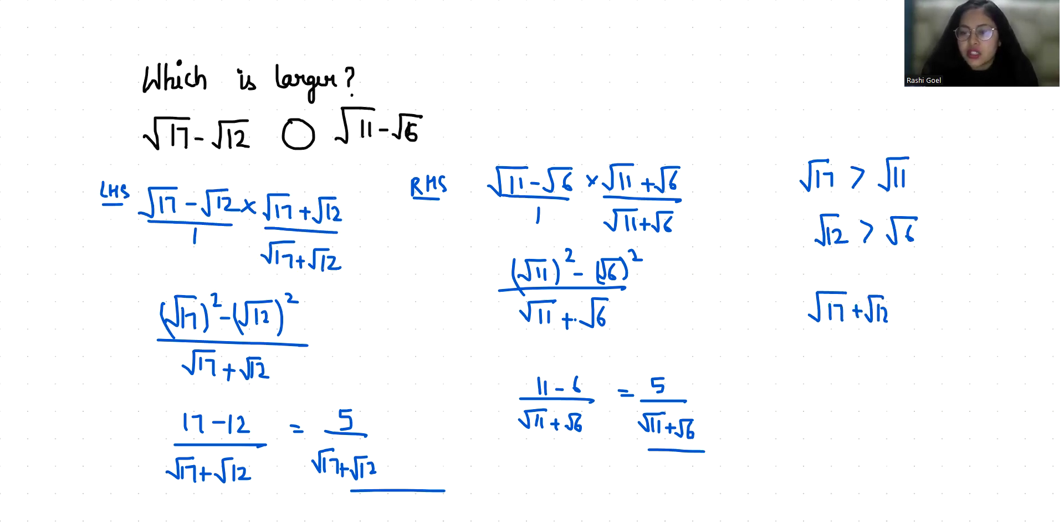So we can say that root 17 minus root 12 is greater than root 11 minus root 6. I hope it's clear and you find it useful. Please give us a thumbs up and subscribe to my channel. Stay tuned.